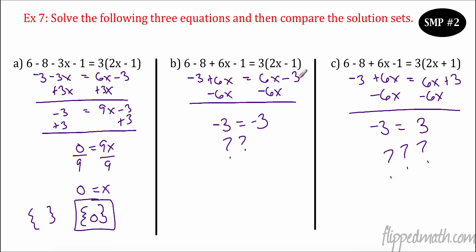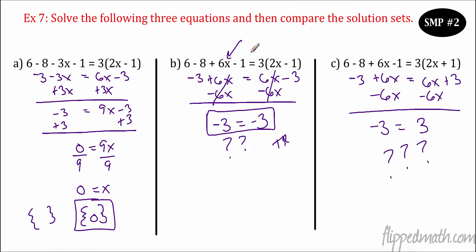Over here we have negative 3 plus 6x equals 6x minus 3. I subtracted these 6x's and look what happens — they cancel out. Now I have no x's. Is negative 3 always equal to negative 3? Well, that is a true statement. That means no matter what I put in for x, it'll always come out to be the same. So that was all real numbers.